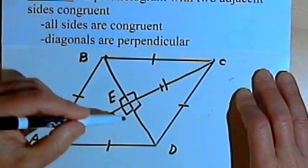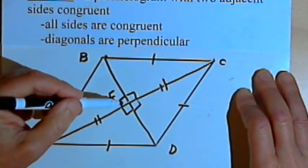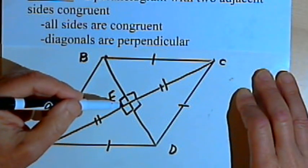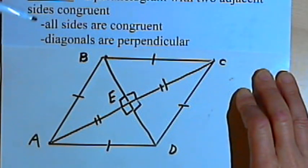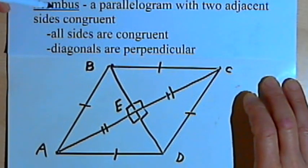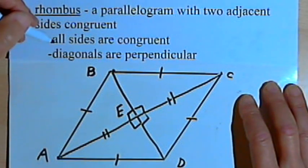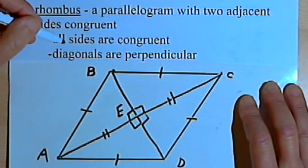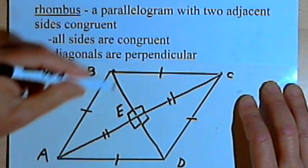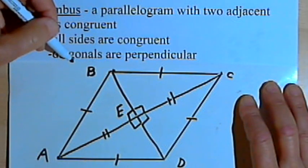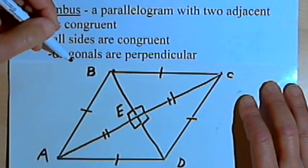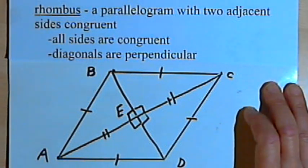So those are the qualities a rhombus has that aren't necessarily true of all parallelograms: all the sides are congruent, and the diagonals are perpendicular to each other. Let's go on to the rectangle.